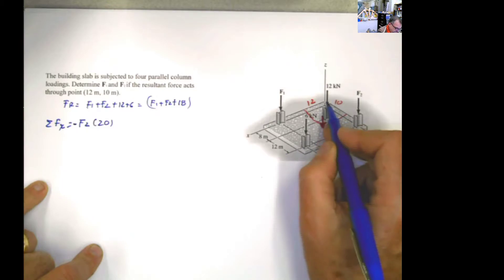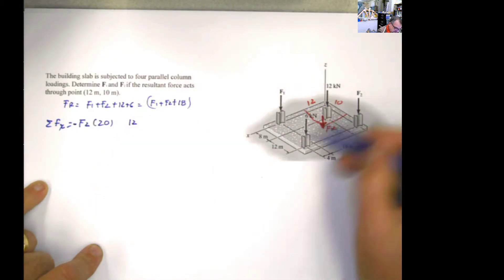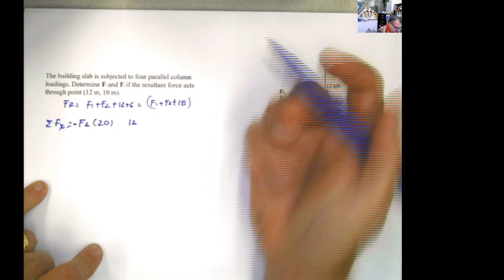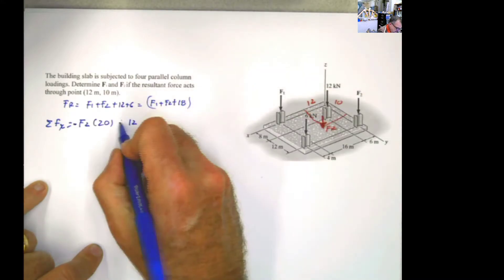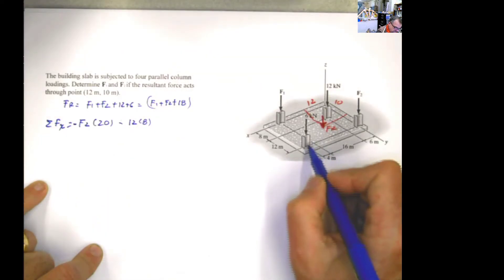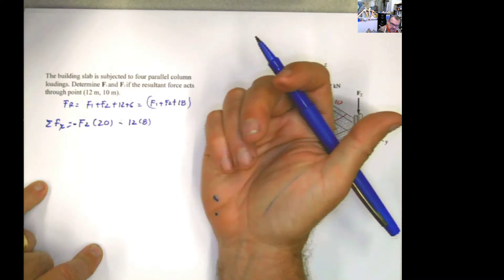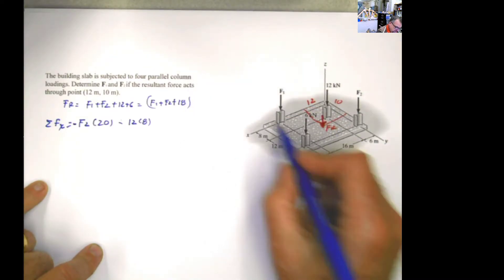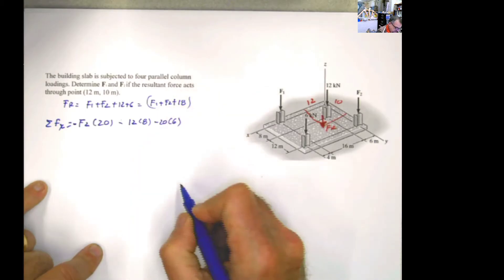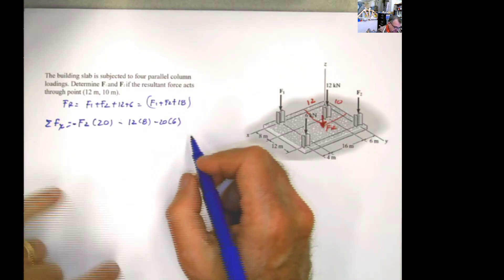So it's going to be negative 20, for the reason I explained. You have this force of 12, and the distance is 8, which is also negative — negative 12 times 8. And you have this force of 6 here, also negative, acting in that way, so it's going to be 20 times 6. This is the summation of the forces' moments in that direction.